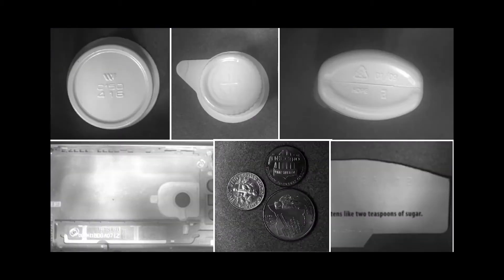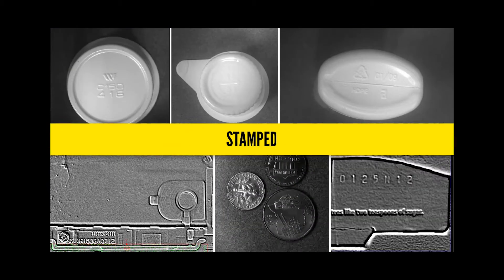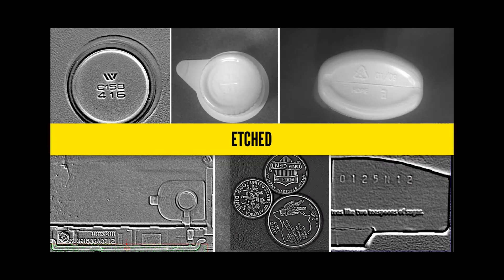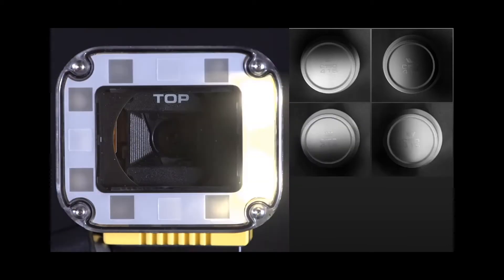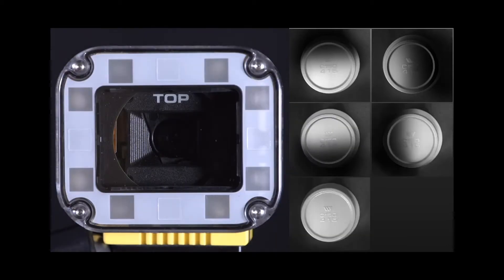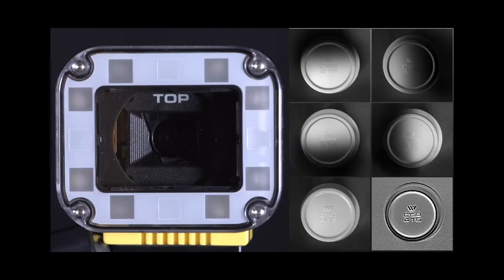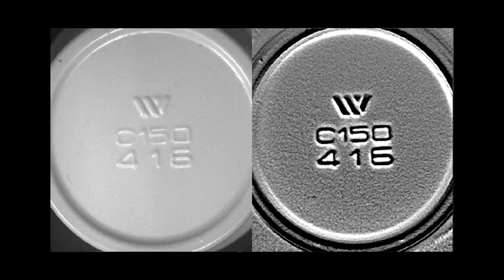SurfaceFX technology inspects features that are engraved, stamped, raised, etched, embossed, or punctured. Lights illuminate the part from four different angles and the shadows and reflections are analyzed by SurfaceFX technology to identify the three-dimensional features and create an image highlighting those raised or recessed features.